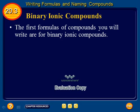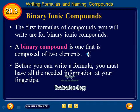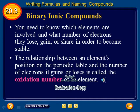Section 3: Binary Ionic Compounds. The first formulas of compounds you will write are for binary ionic compounds. A binary compound is one that is composed of two elements. Before you can write a formula, you must have all the needed information at your fingertips. You need to know which elements are involved and what number of electrons they lose, gain, or share in order to become stable. The relationship between an element's position on the periodic table and the number of electrons it gains or loses is called the oxidation number of an element.